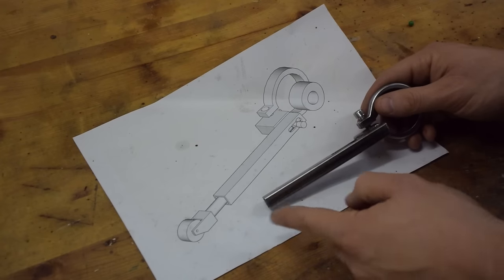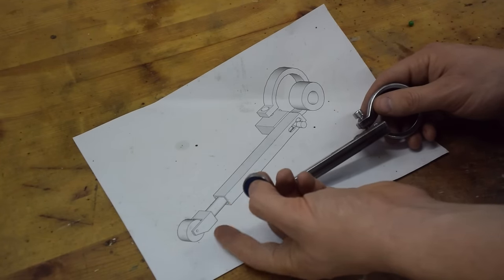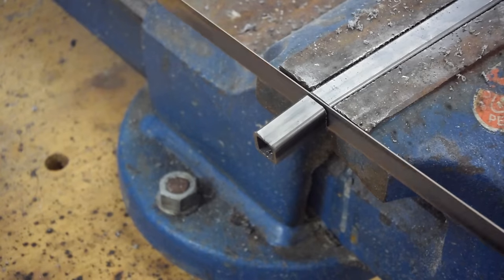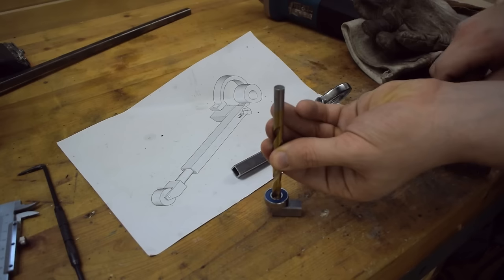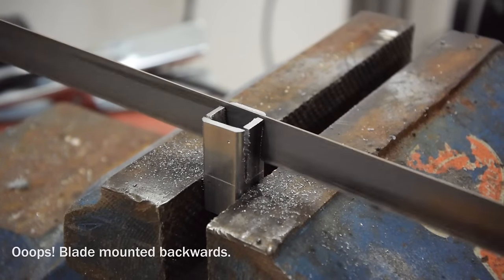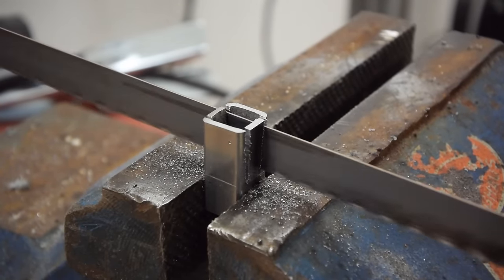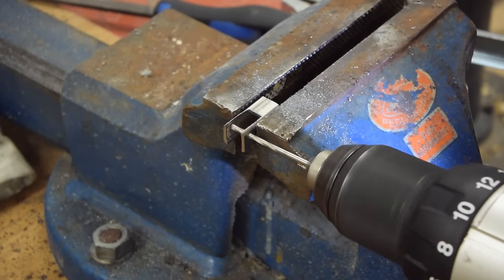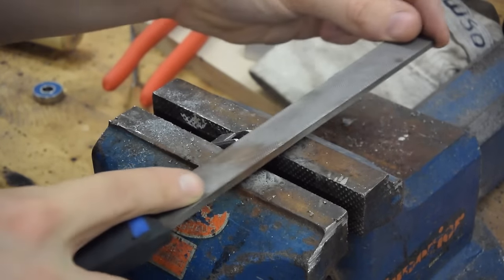Now the next part to make is this pulley assembly and for the pulley I'm gonna use a roller skate bearing. Probably not the best choice, but that's all I have on hand.